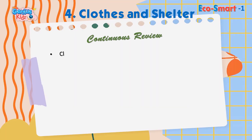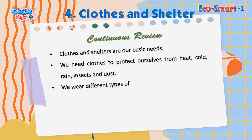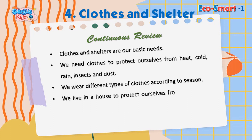Continuous review. Clothes and shelter are our basic needs. We need clothes to protect ourselves from heat, cold, rain, insects, and dust. We wear different types of clothes according to the season. We live in a house to protect ourselves from heat, cold, rain, wild animals, and thieves.